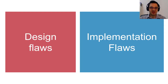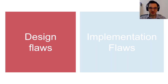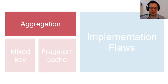These findings consist of three design flaws and several implementation flaws. I'll first focus on the design flaws, and in particular on the aggregation flaw. To understand this design flaw, I will first explain how aggregation works in Wi-Fi.